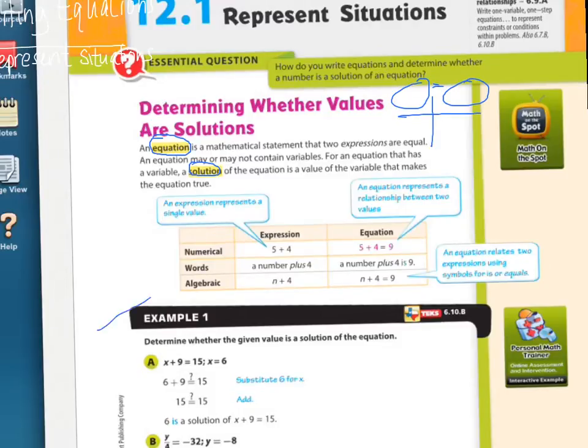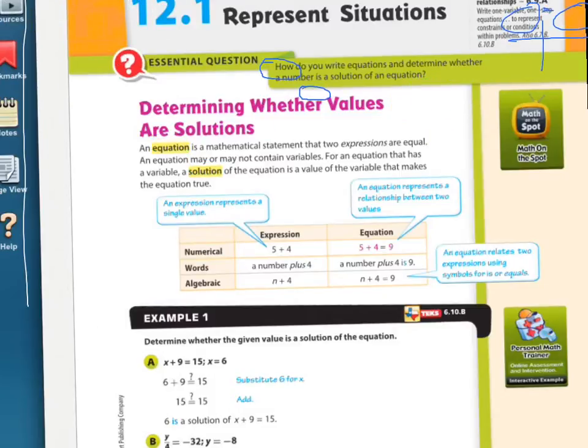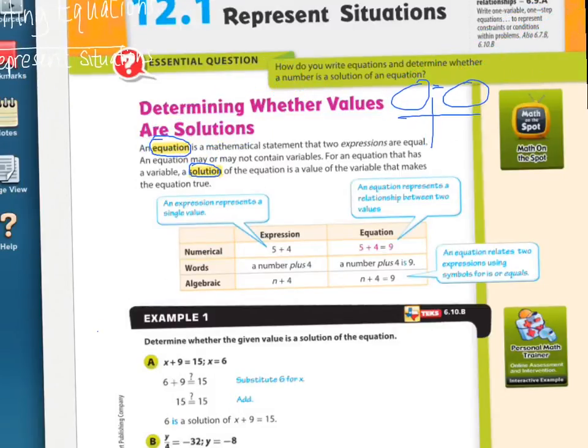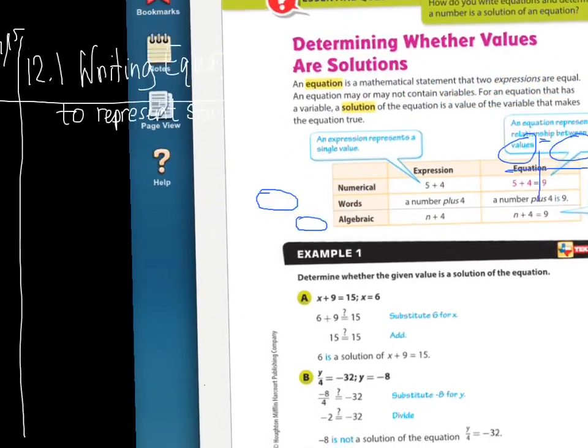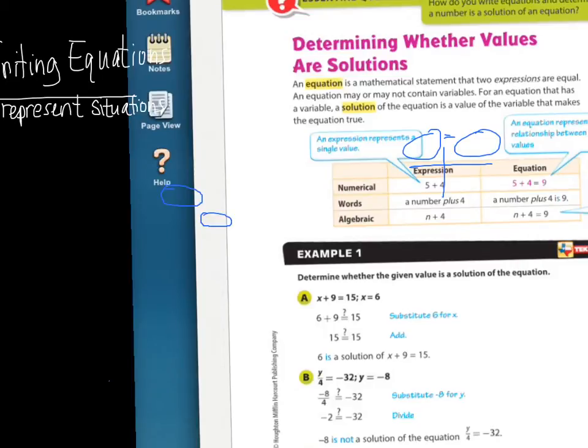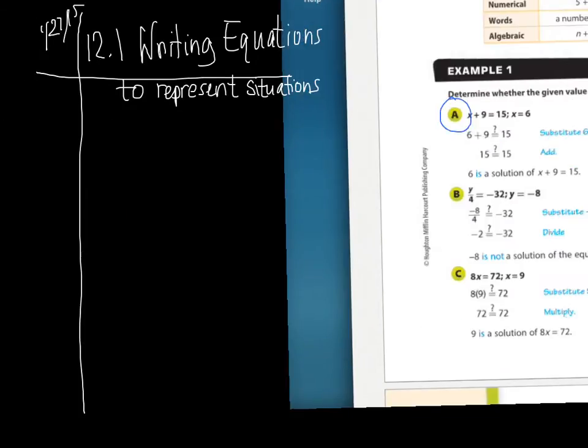So let's look at example A right here. Okay, on your paper, in your notes, you're going to write down the equation, x plus 9 equals 15. And then they're saying, x equals 6. We're going to see if that's true or not, x equals 6.